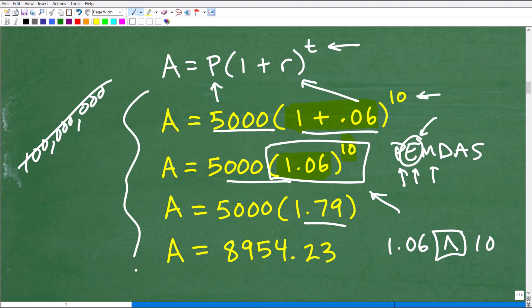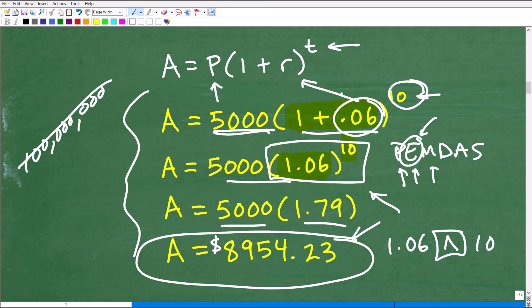And notice how I'm showing all my work like this. This is what you need to be doing as well. Now we can take that 5,000 and multiply by 1.79. And you'll get this answer 8,954.23. That is the correct answer. We are talking about dollars. So this is how much this $5,000 grew over 10 years at 6% annual compound interest, it grew into $8,154.23.